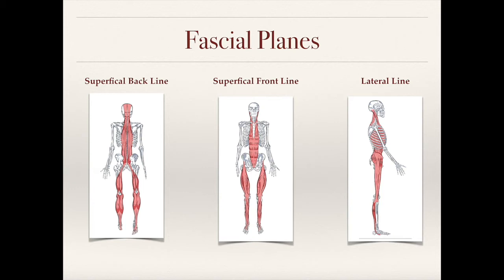Right here we see what's called the superficial back line, which is essentially equivalent to the bladder meridian. In the center image we see the superficial front line, which is similar to the stomach meridian. Then on the right side we see the lateral line, which is similar to the gallbladder meridian.